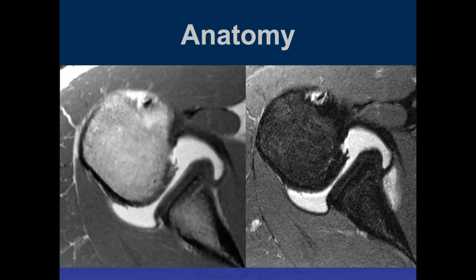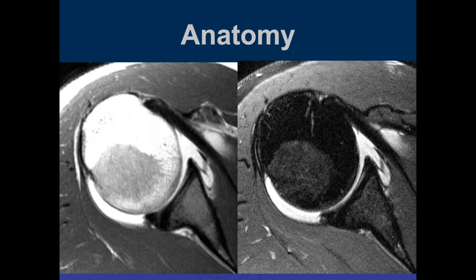In the axial plane with T1 arthrogram and PD fat sat, inferiorly we see the articular cartilage on the glenoid and humeral head. Going superiorly we see the articular cartilages, anterior and posterior labrum, and the middle glenohumeral ligament. There are basically three structures anteriorly to differentiate: the middle glenohumeral ligament, the anterior band of the inferior glenohumeral ligament (which may attach superiorly), and the anterior labrum. A labral tear could masquerade as either of the other two.